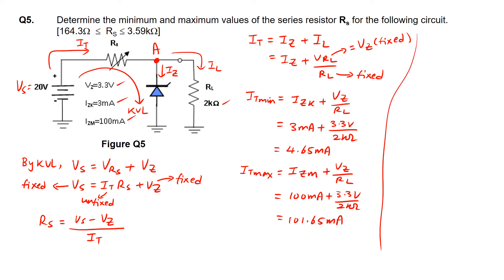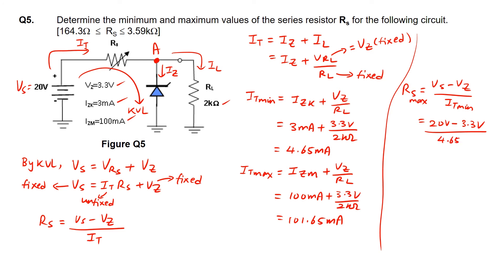To find RS_max or RS_min, we use the equation RS equals (Vs minus Vz) over It. For RS_max, the denominator must be the minimum value — It_min. Substituting: (20 volts minus 3.3 volts) over 4.65 mA gives RS_max equals 3.59 kΩ.